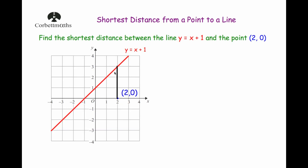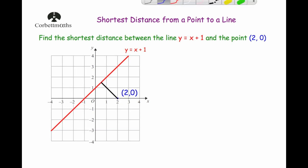If you were to go straight up from the point (2, 0) to the line you can see it would be 1, 2, 3 units. If you were to go horizontally from the point to the line again you would see it would be 1, 2, 3 units. But as you move across diagonally you can see the line gets much shorter, and it's at its shortest whenever this black line is at right angles or is perpendicular to the red line — in other words, perpendicular to the line you're given in the question.